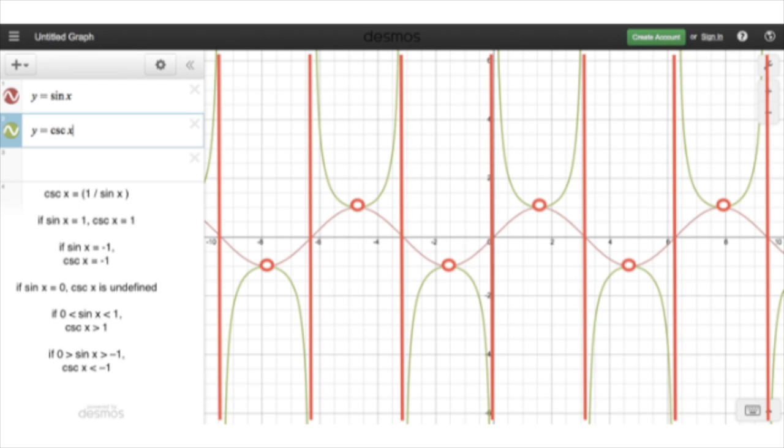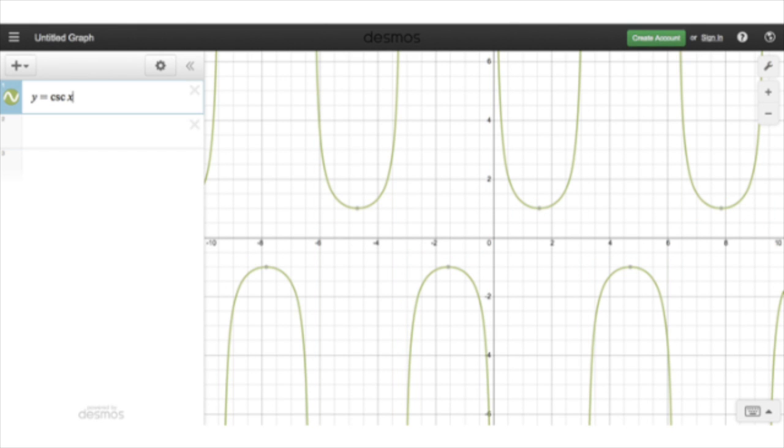And as the sine goes between 0 and negative 1, its reciprocal is going to be less than negative 1. And so that's what the cosecant curve looks like when it's all by itself.